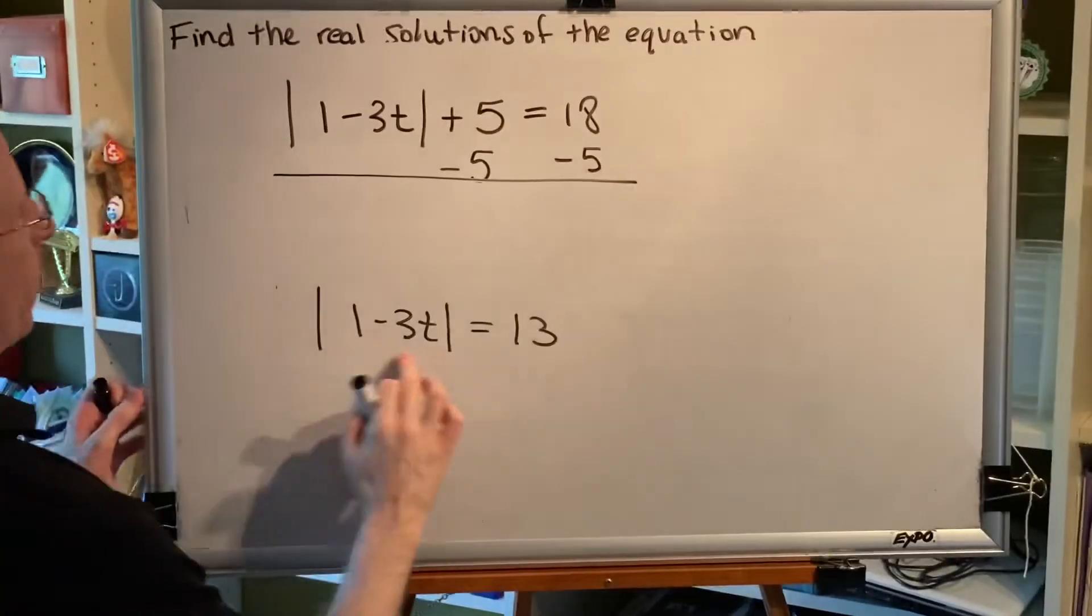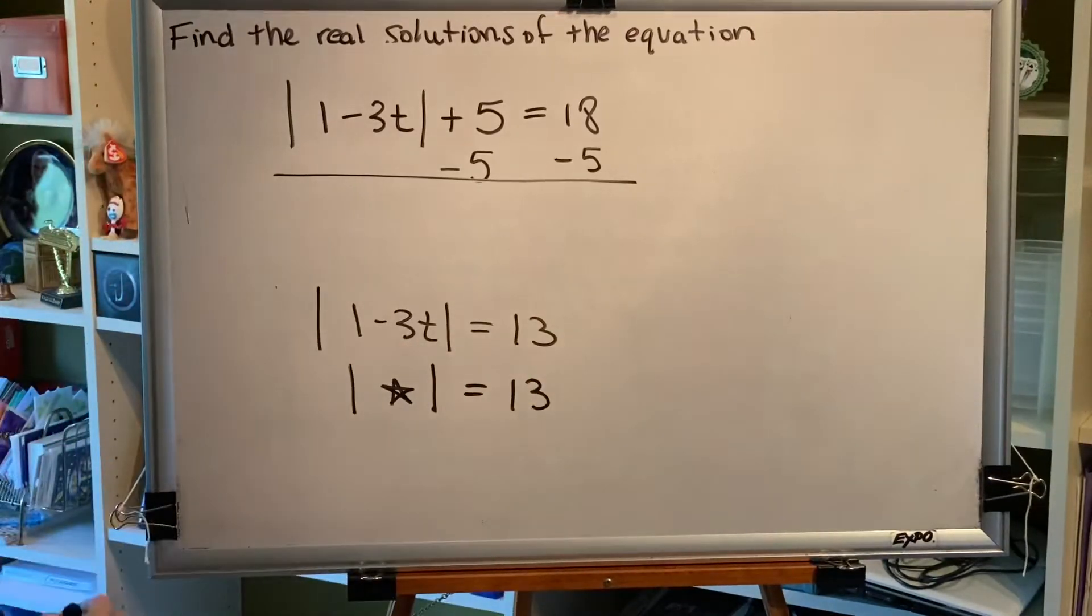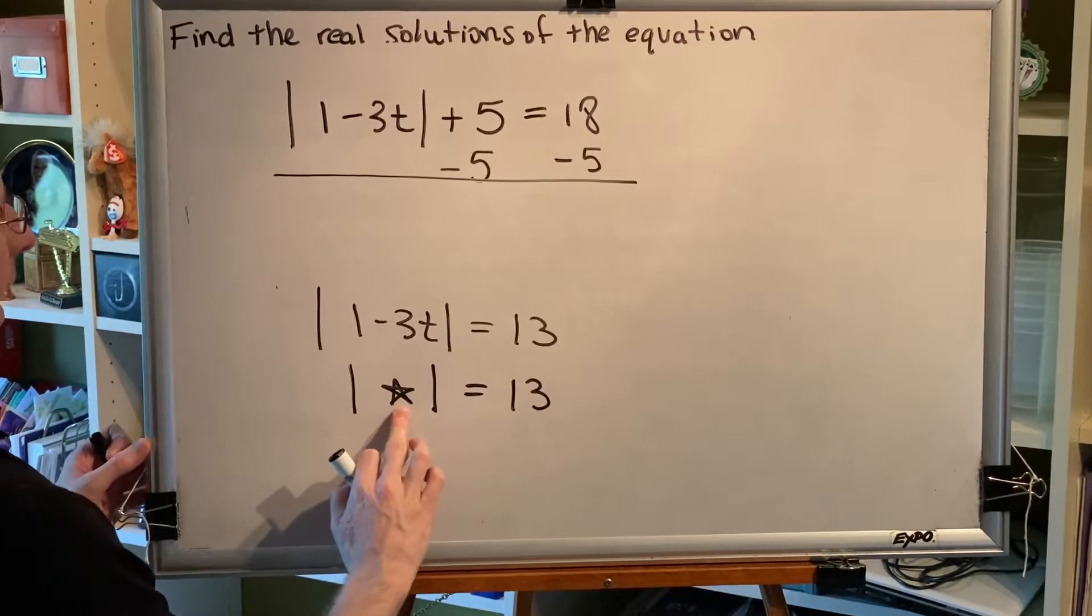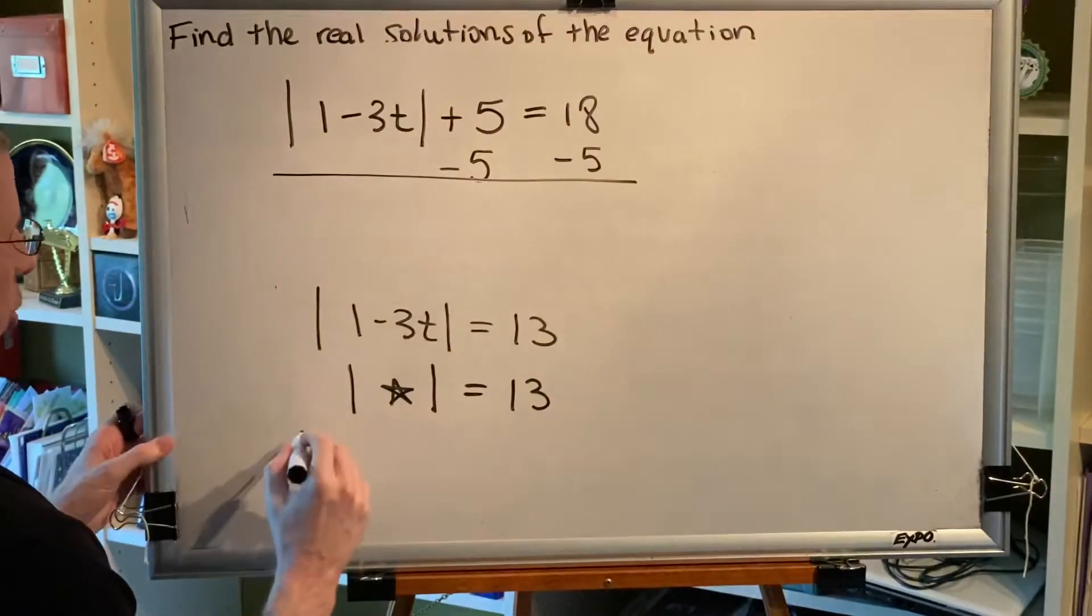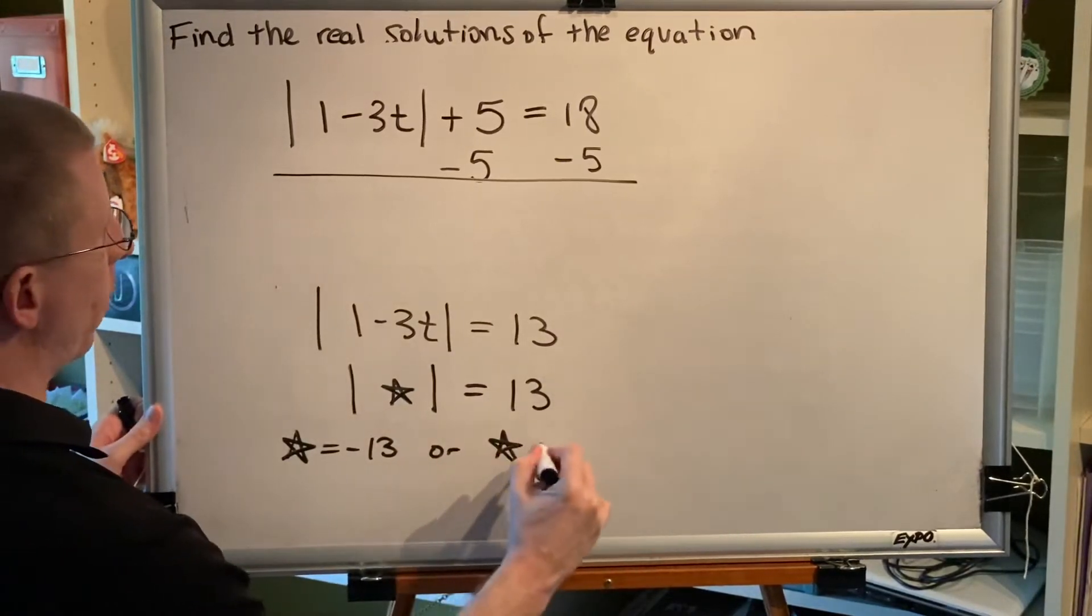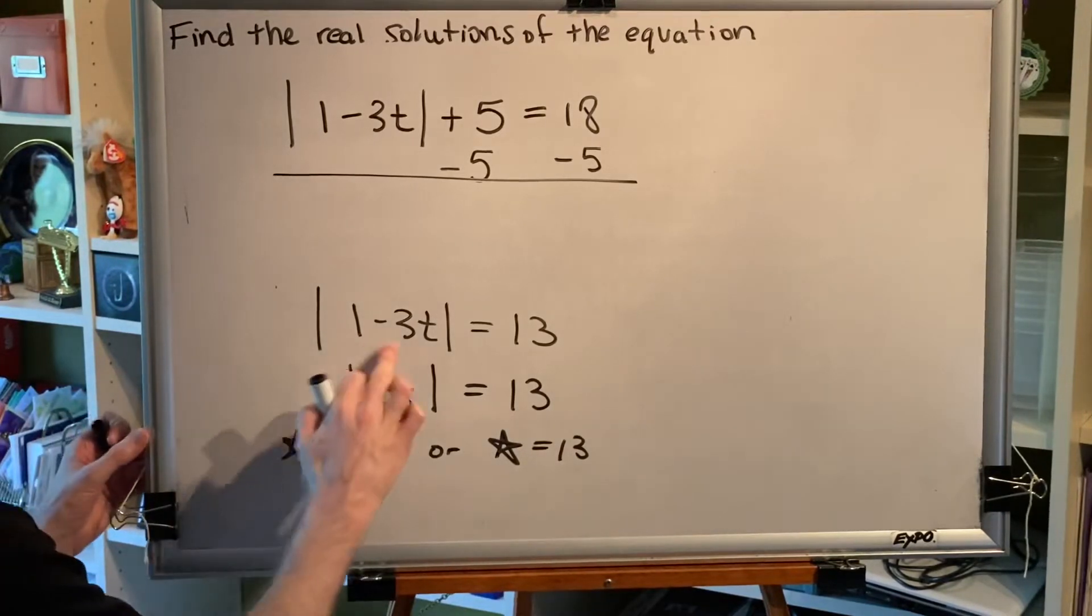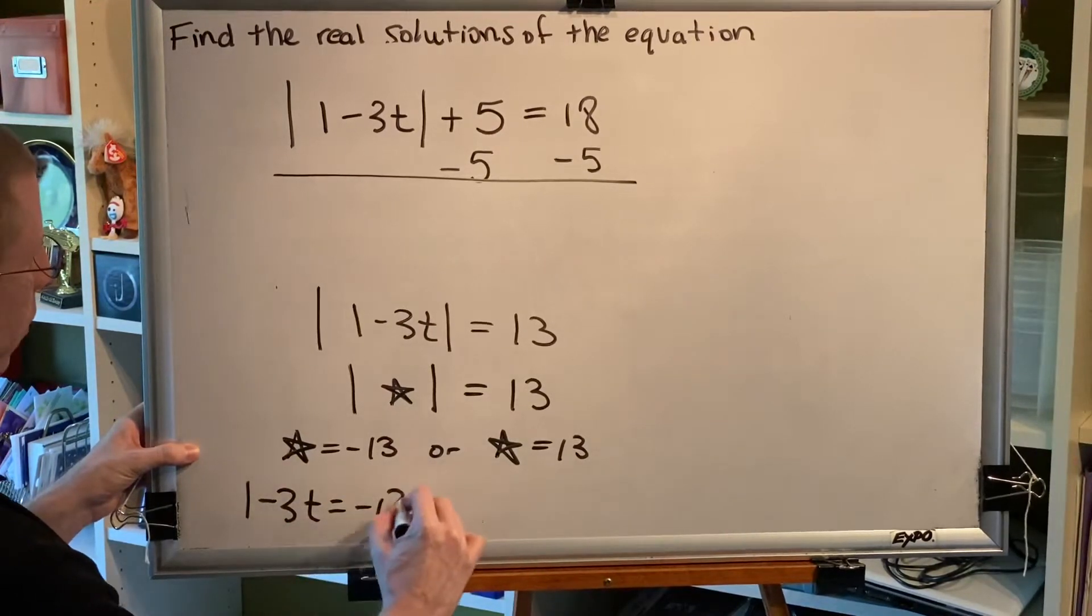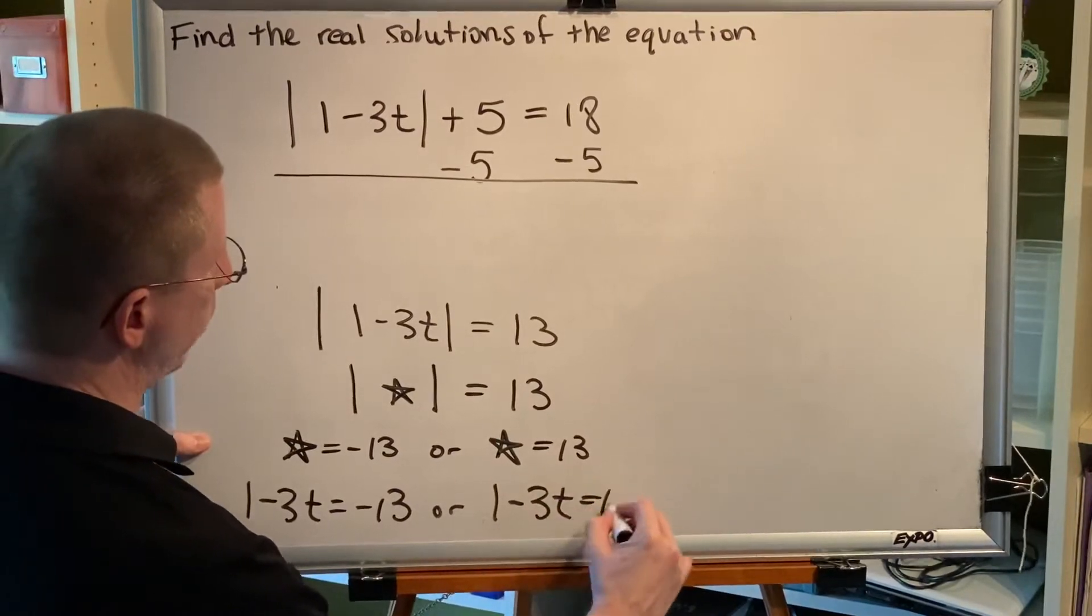Alright, now, replace the expression inside the absolute value bars with a star. And we get the absolute value of star equals 13. Now, what kind of number can we replace star with so that, when we take the absolute value, we get the result 13? The answer is star can be negative 13 or star can be replaced with positive 13. Of course, star in this problem is actually 1 minus 3t. So, we get 1 minus 3t equals negative 13 or 1 minus 3t equals positive 13.